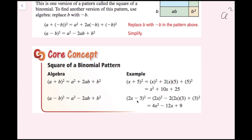For 2x minus 3 quantity squared, I do 2x quantity squared, then minus 2 times 2x times 3, then plus 3 squared. You could also think of this as plus 2 times 2x times negative 3 — you'll get the same value. Then plus my last term, 3 squared. Since negative 3 times negative 3 gives a positive, this all simplifies to 4x squared minus 12x plus 9.